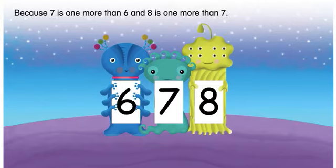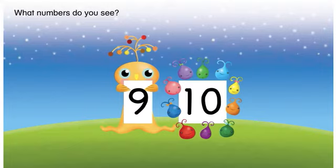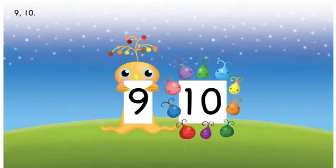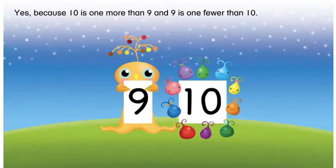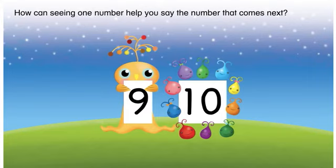What numbers do you see? Let's say the numbers aloud: nine, ten. Are they in order? Yes, because ten is one more than nine, and nine is one fewer than ten.